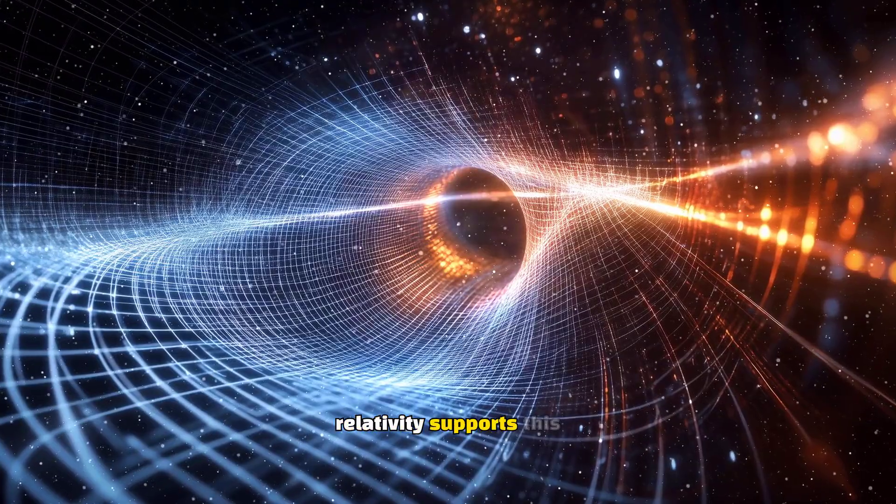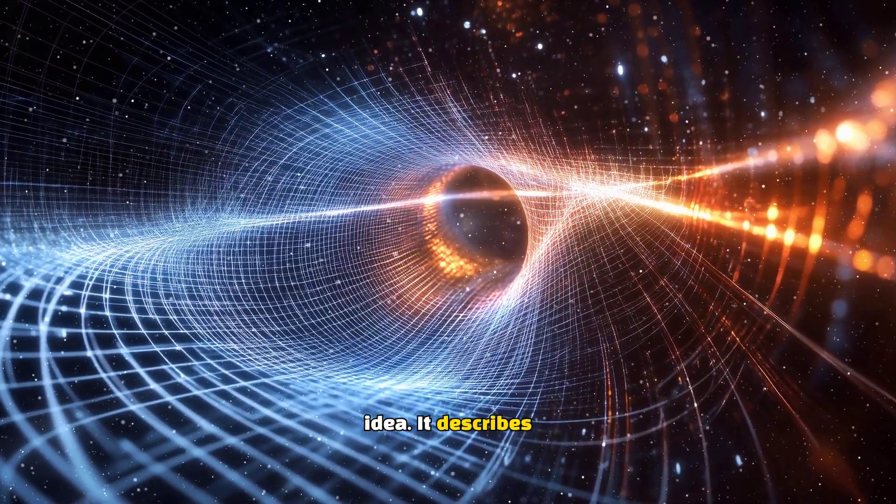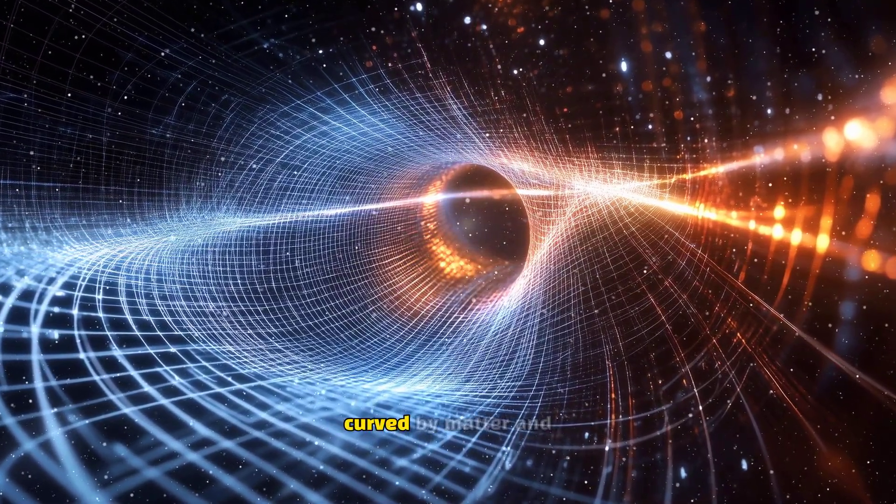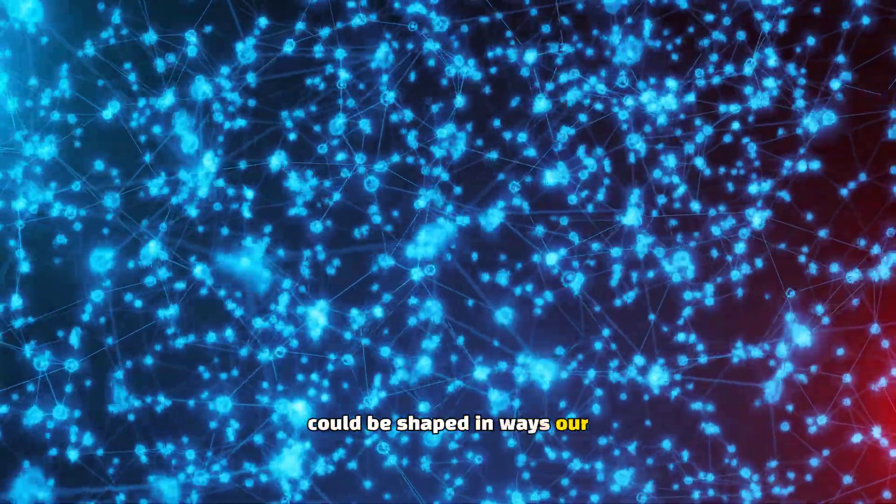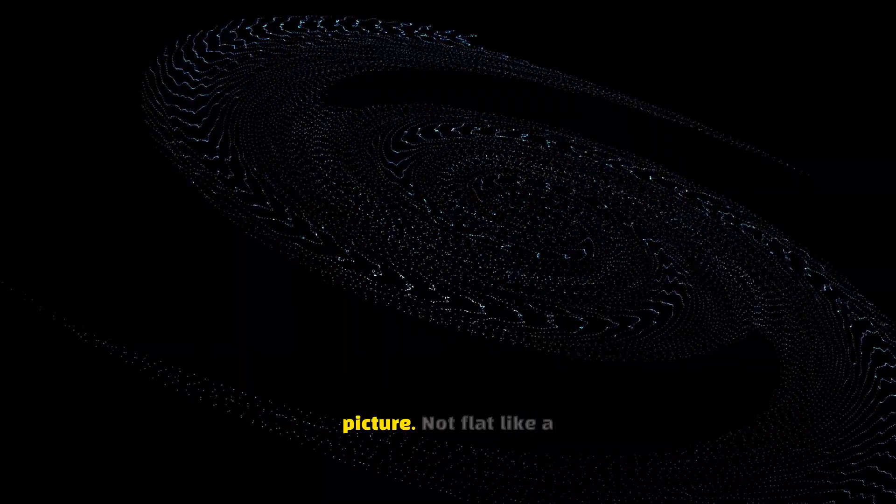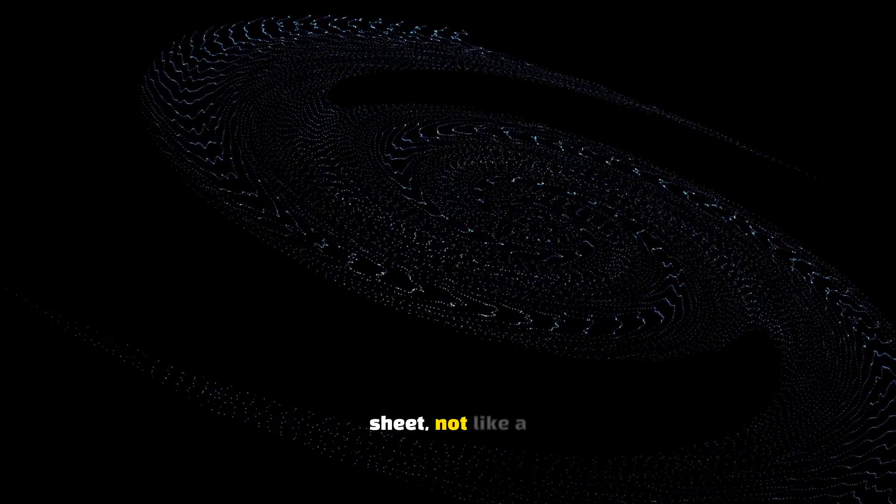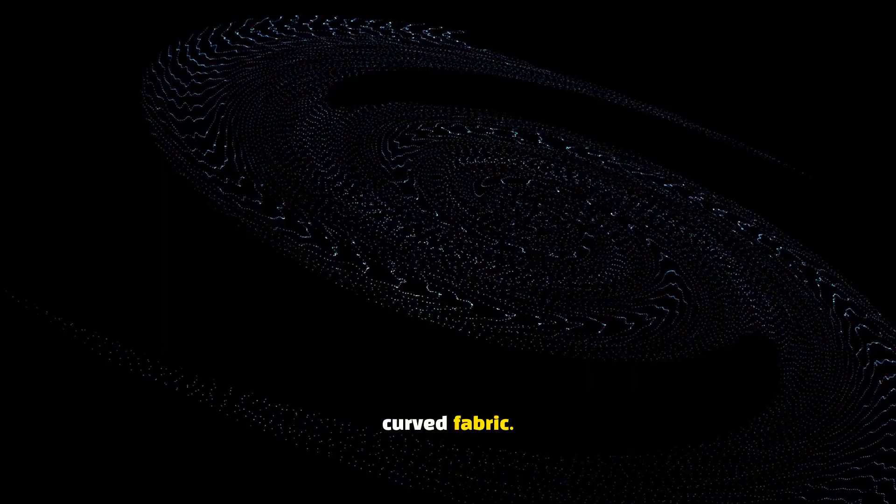Einstein's theory of general relativity supports this idea. It describes how space and time are curved by matter and energy. So, the universe could be shaped in ways our minds struggle to picture. Not flat like a sheet, not like a cube, but more like a boundless curved fabric.